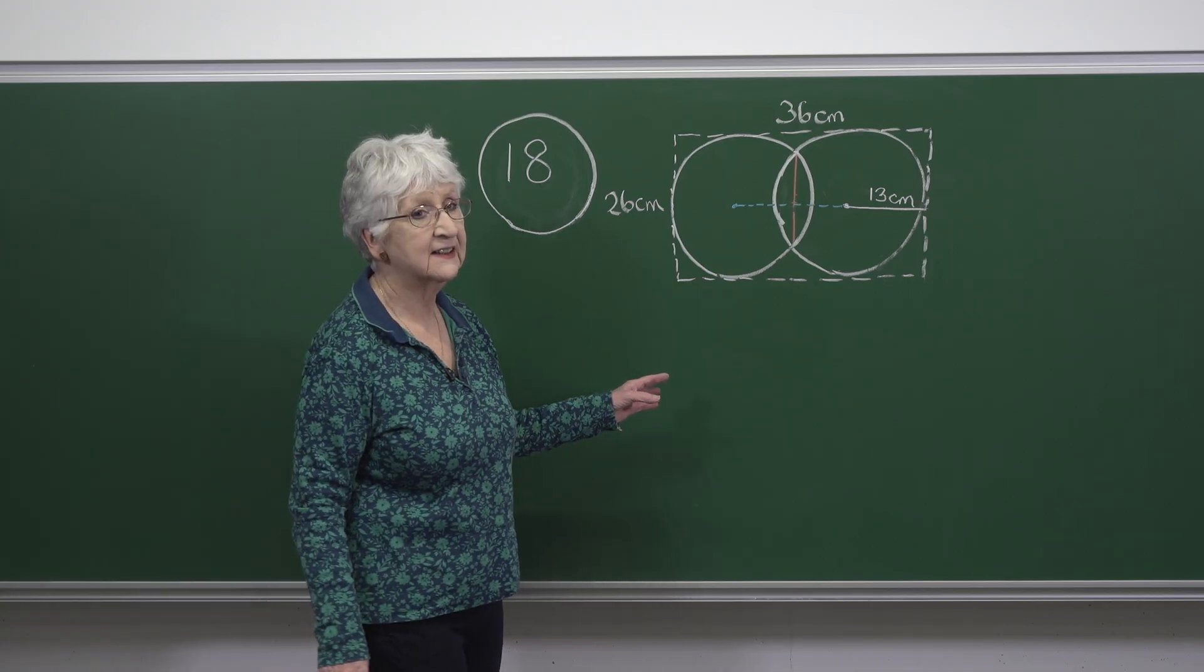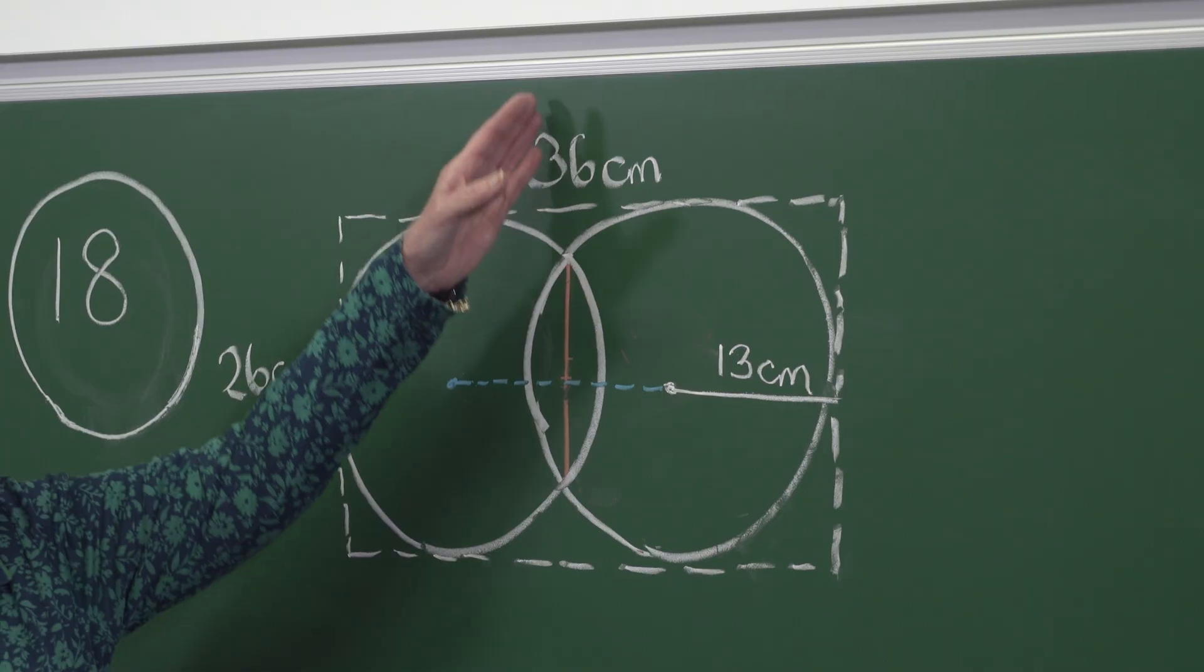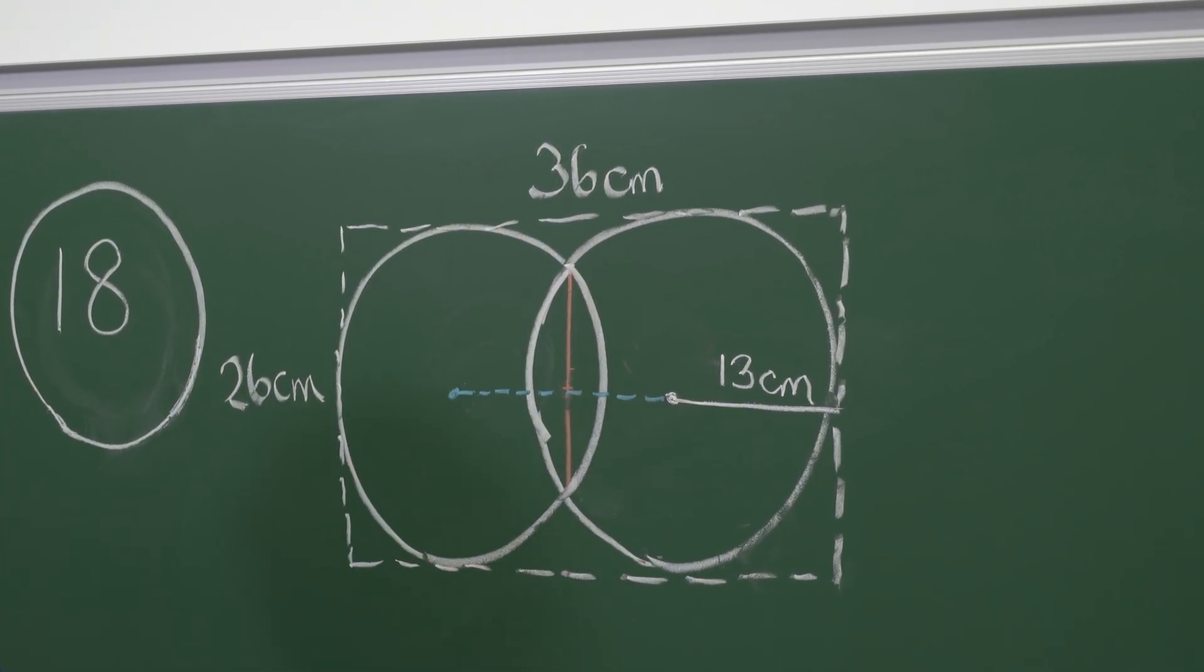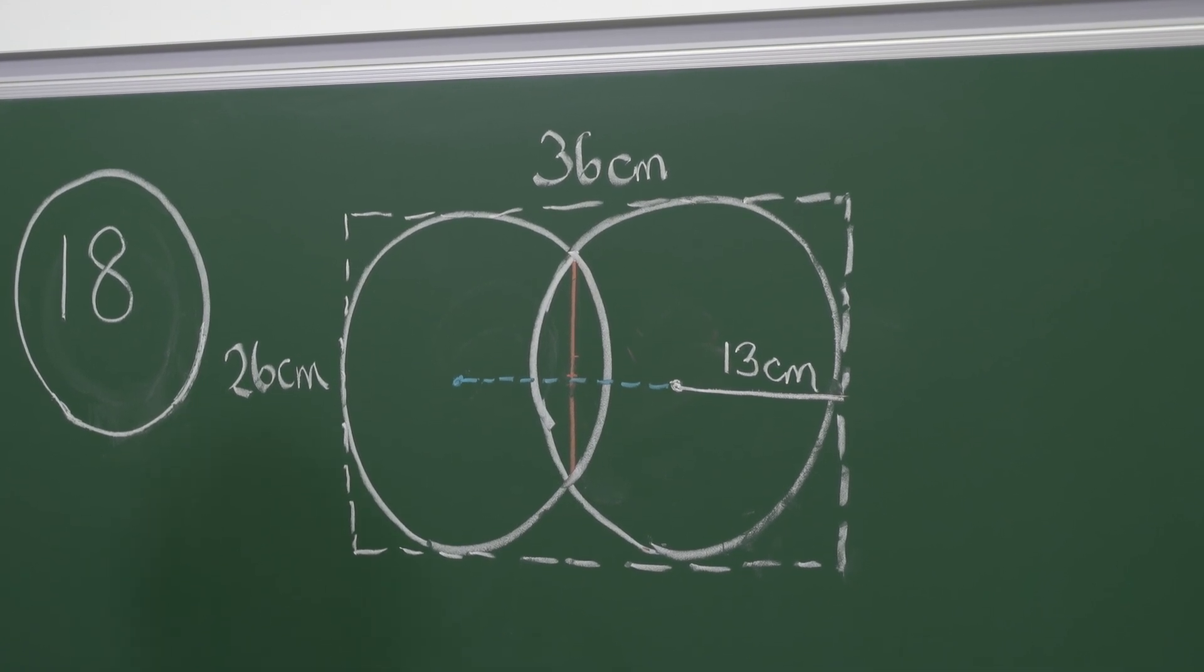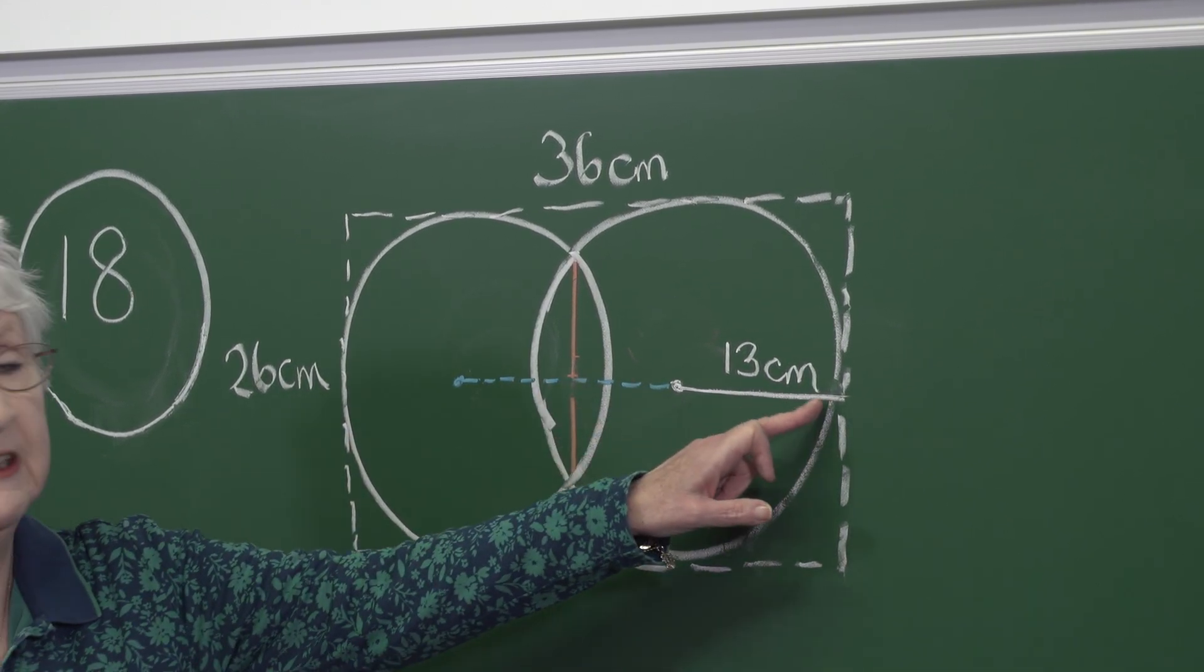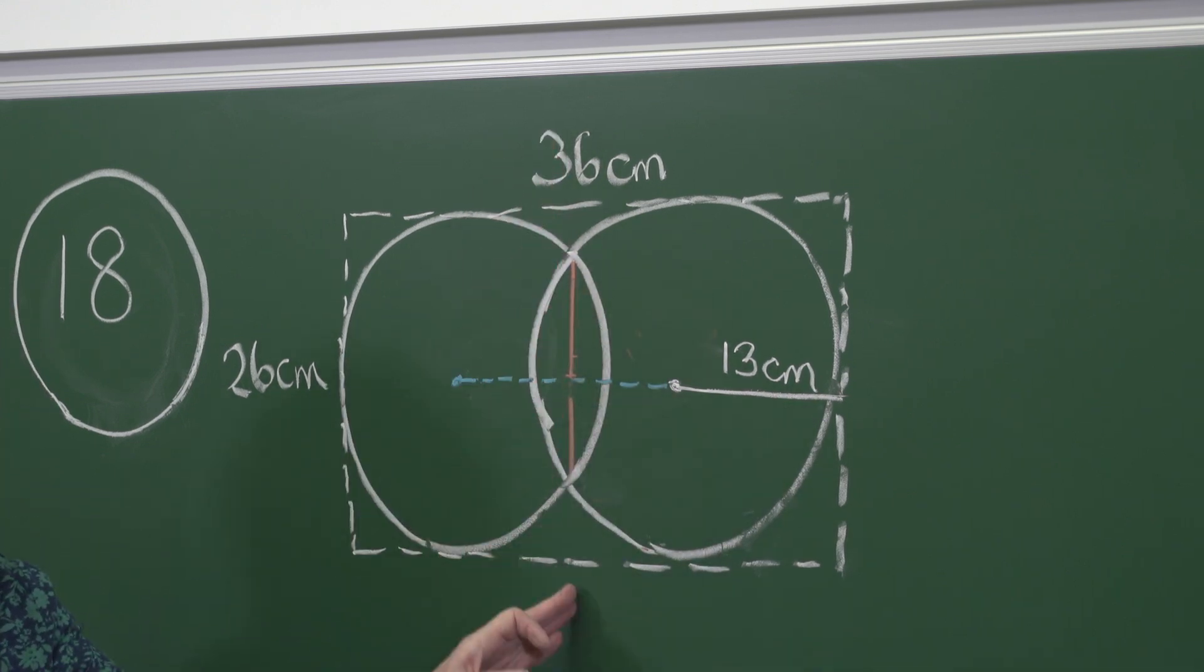And so in this rectangle here, we can see that this red line segment is a line of symmetry. So that means that the distance from here to here is half of 36, which is 18 centimeters.